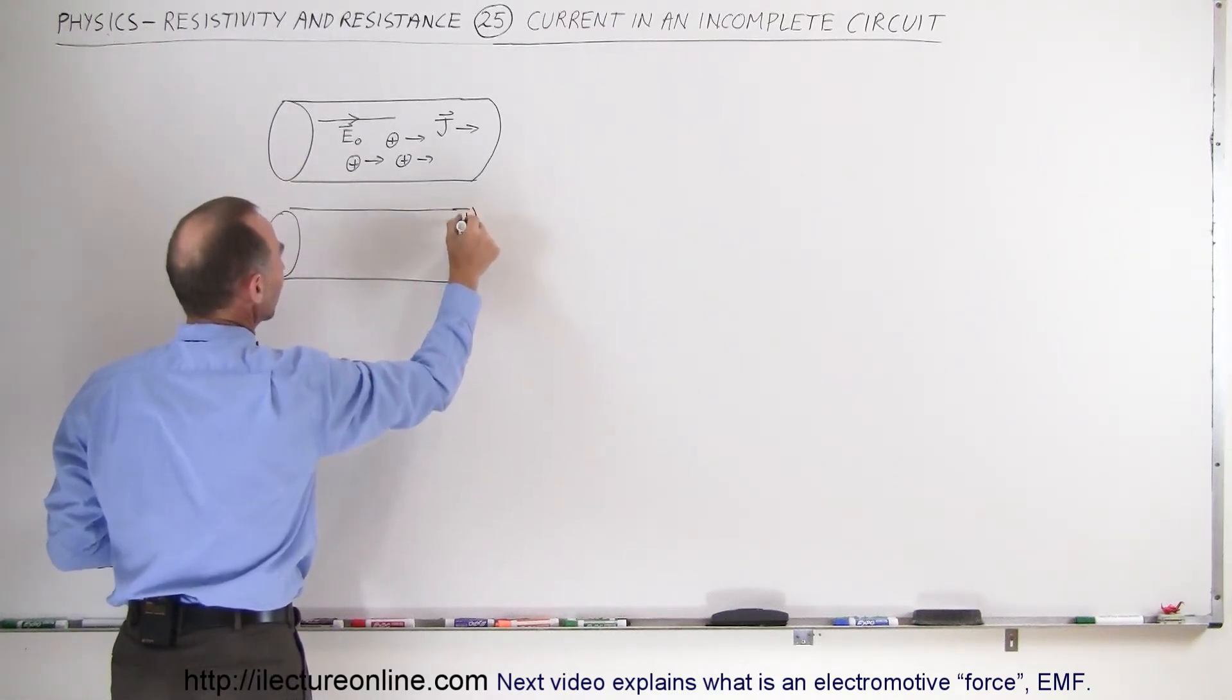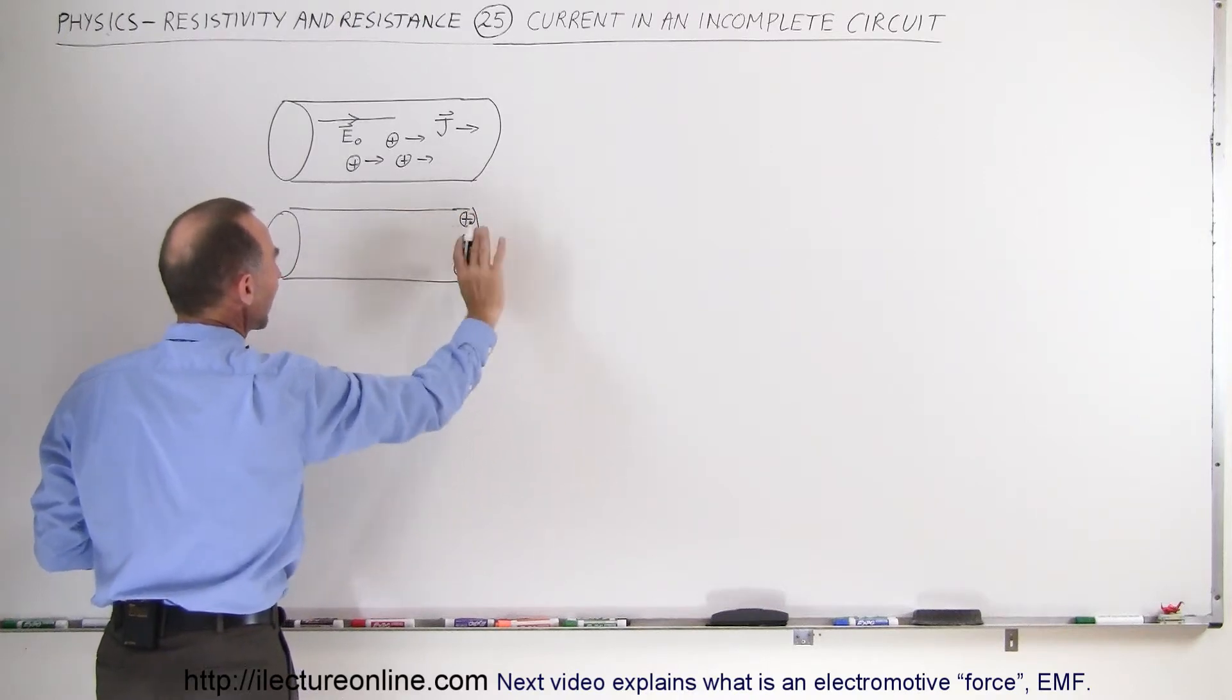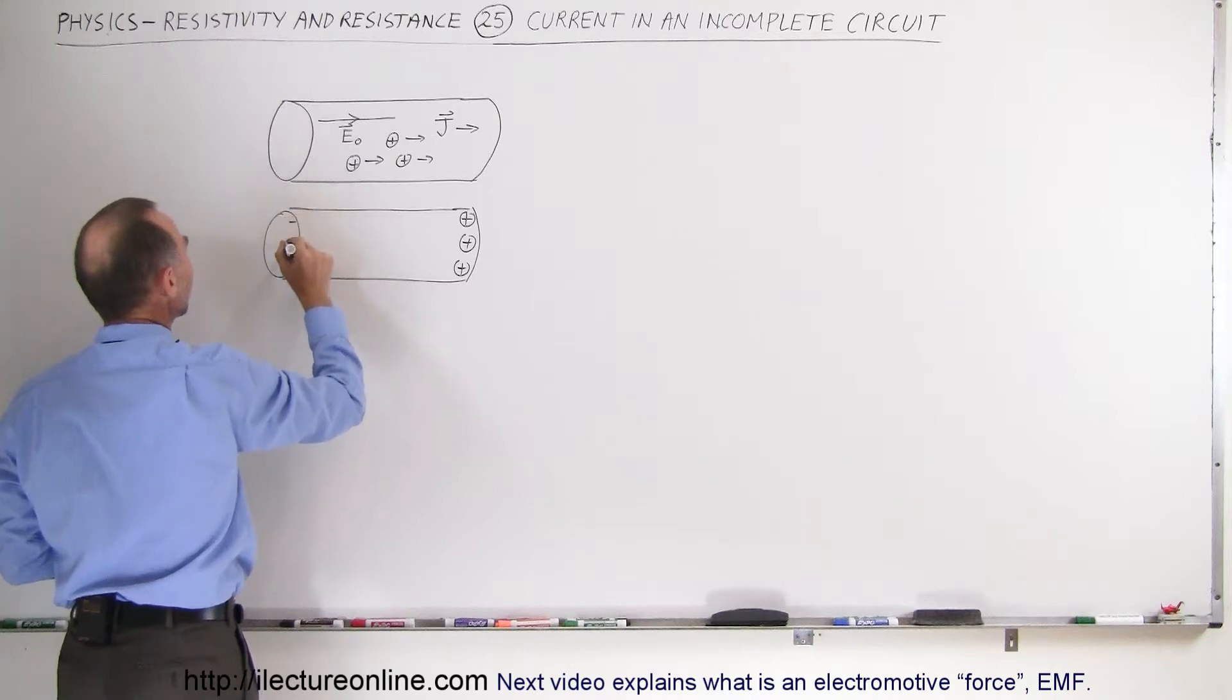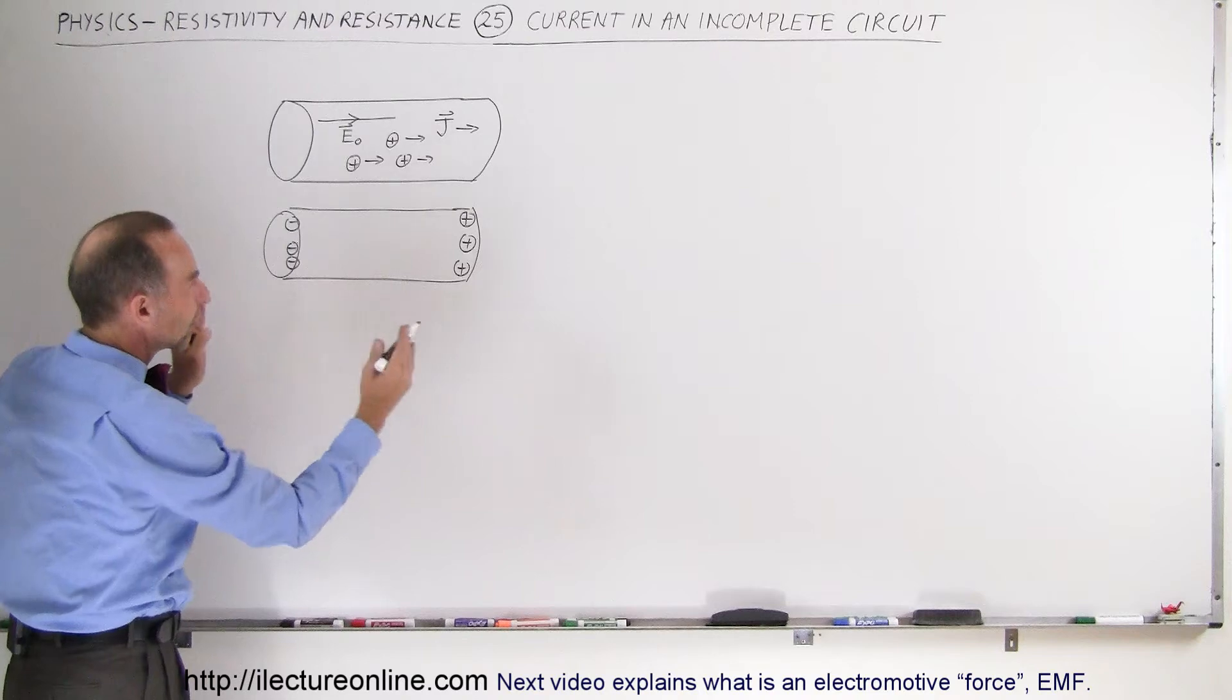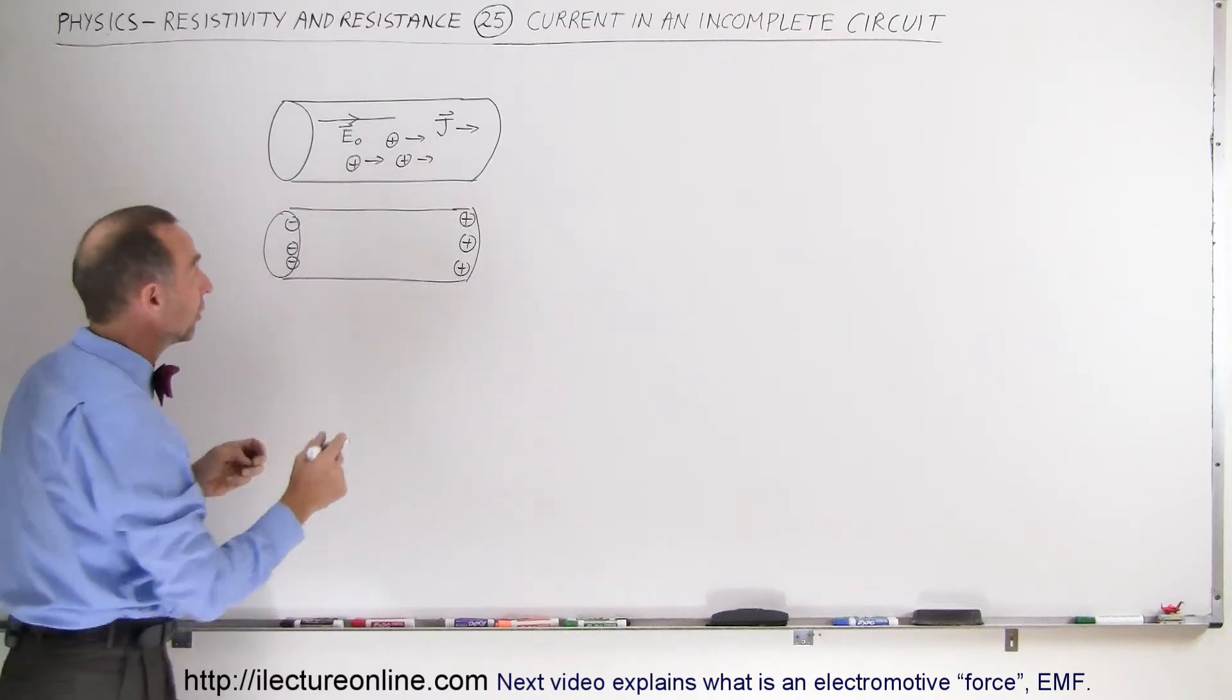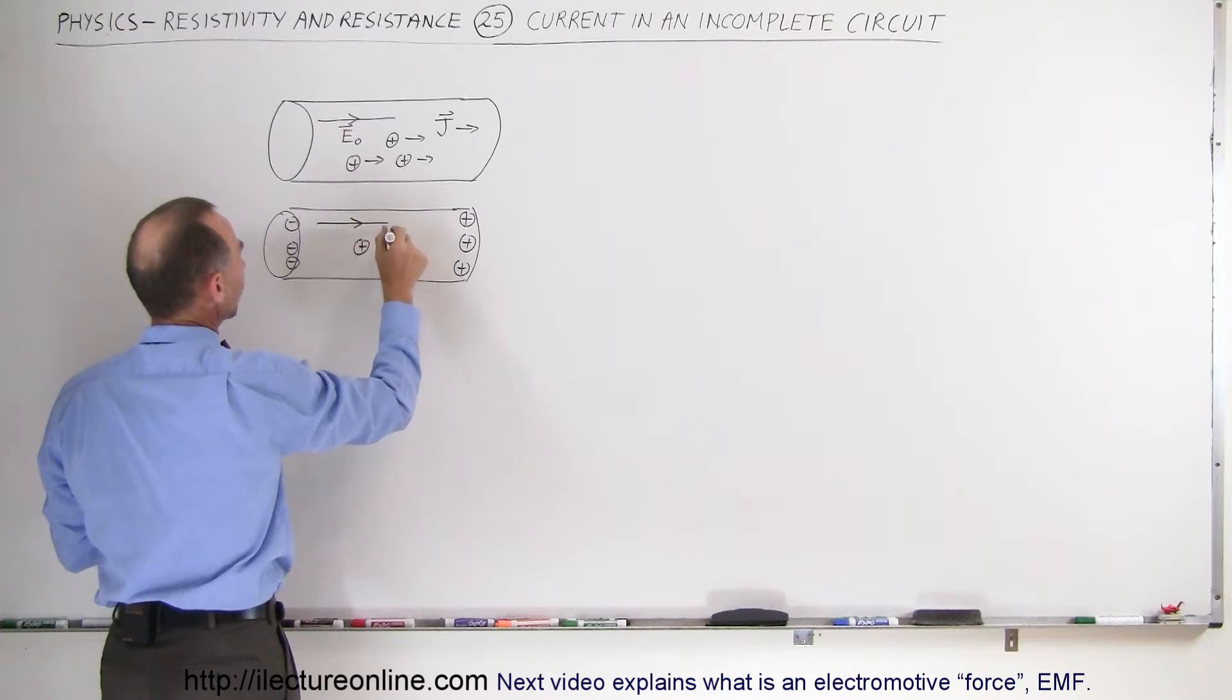What happens is that these positive charges will reach the end of the conductor. They'll get pushed up against the end, which means that on the left side of the conductor, you'll end up with a net negative charge. So the separation of charges within the conductor, as the electric field is continuing to push charges towards the right,